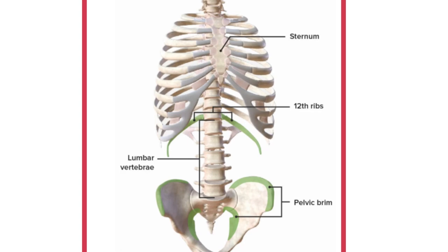Looking at the image, we see the colored area. This is the 12th rib, which is the proximal limit of the posterior abdominal wall. Here we're seeing the iliac bone, and this region is the pelvic brim. So the extent of the posterior abdominal region is from the 12th rib to the pelvic brim, which is at the level of L4.